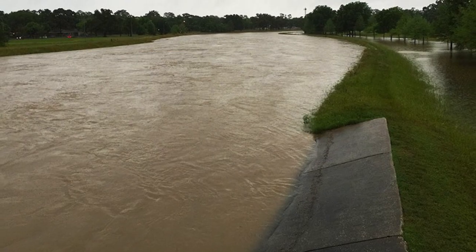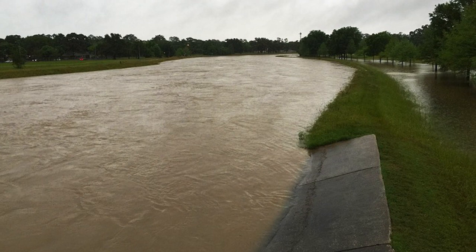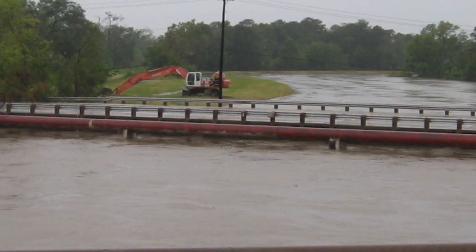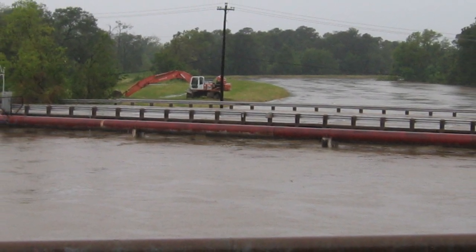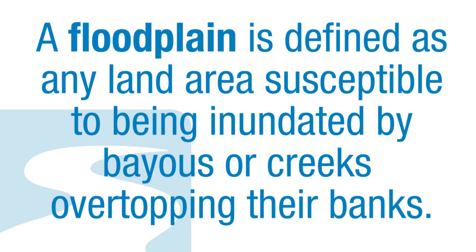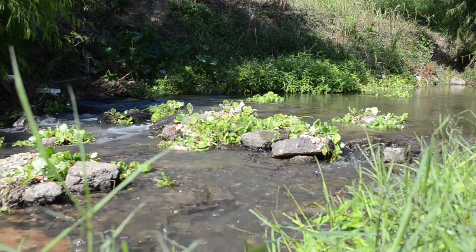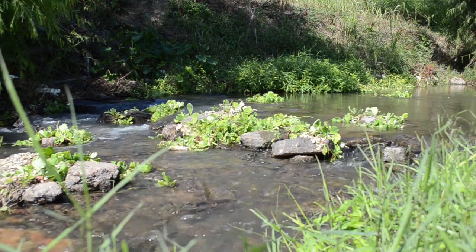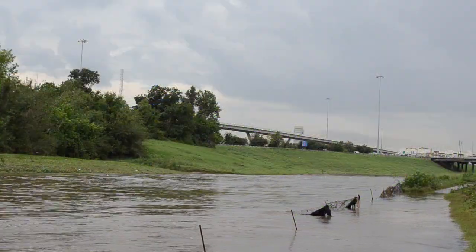From time to time, bayous and creeks naturally come out of their banks due to heavy rainfall and inundate the adjacent land. This area is referred to as a floodplain. A floodplain is defined as any land area susceptible to being inundated by bayous or creeks overtopping their banks. Each bayou and creek has its own floodplains where water collects, pools, and flows during the course of a storm event.